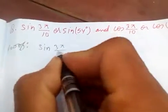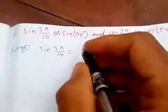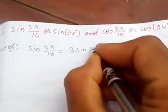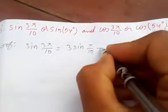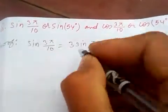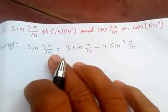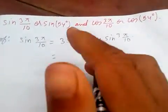sin(3π/10) is just sin(3 × π/10), so it is 3 sin(π/10) minus 4 sin³(π/10). This is the triple angle formula for sine.